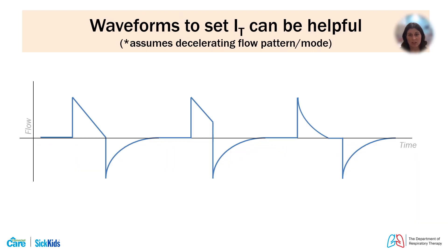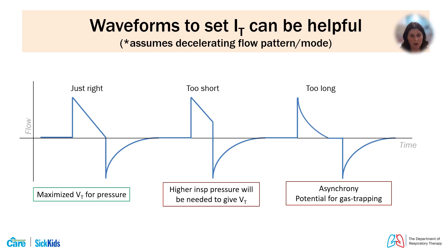Waveforms can be very helpful, particularly with setting your inspiratory time. Using a decelerating flow pattern — pressure control or PRVC — on the flow-time scalar, setting your inspiratory time where flow almost reaches near zero gives the most area under the curve, representing your tidal volume. If you shorten the inspiratory time too much, you need higher inspiratory pressure to give the same tidal volume. If your inspiratory time is too long, you will have an inspiratory hold, producing asynchrony and potential gas trapping if you increase respiratory rate.